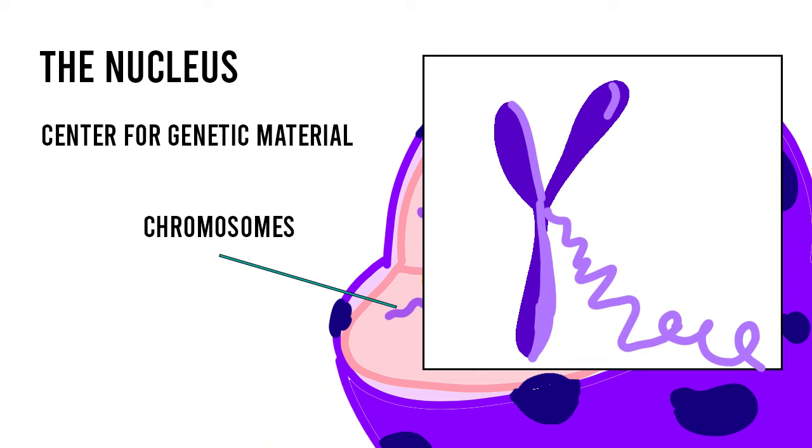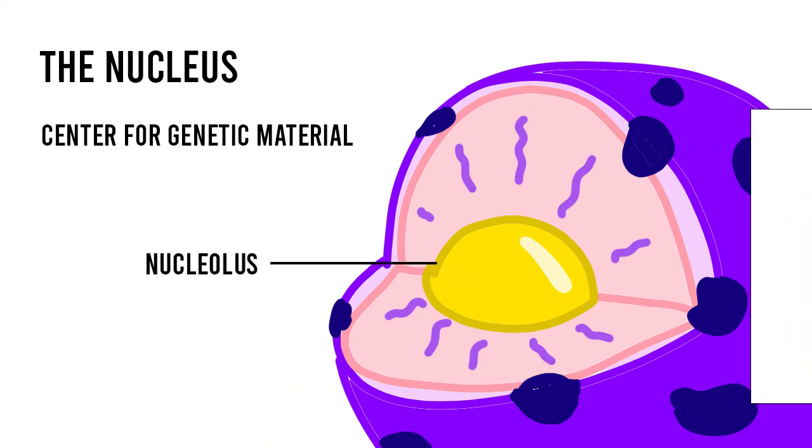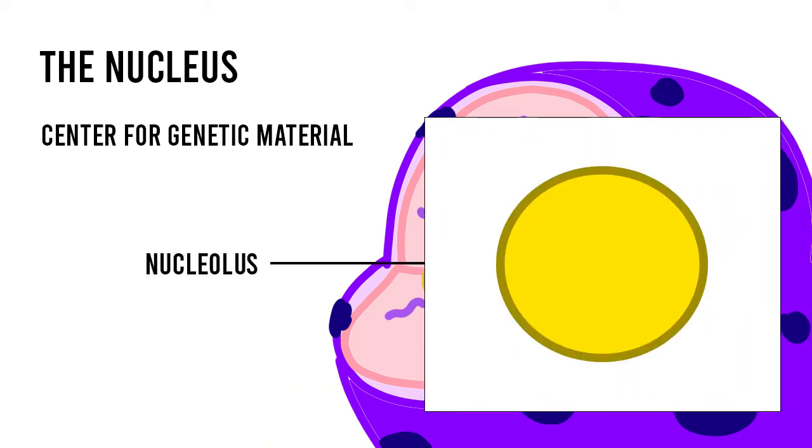The chromosomes are organized packages of DNA found in the nucleus. These chromosomes contain the elements necessary for processes such as replication. Finally, the nucleolus is a small spherical body located within the nucleus which is responsible for synthesizing RNA and assembling the cell's ribosomes.